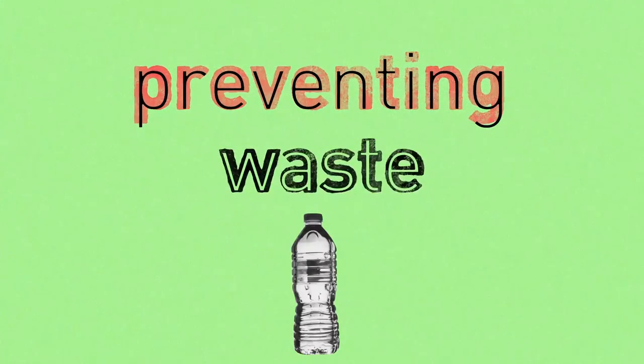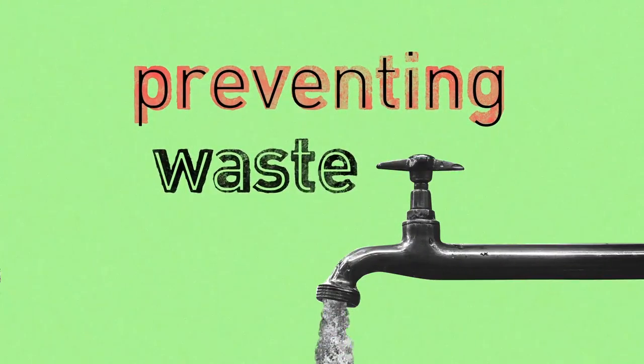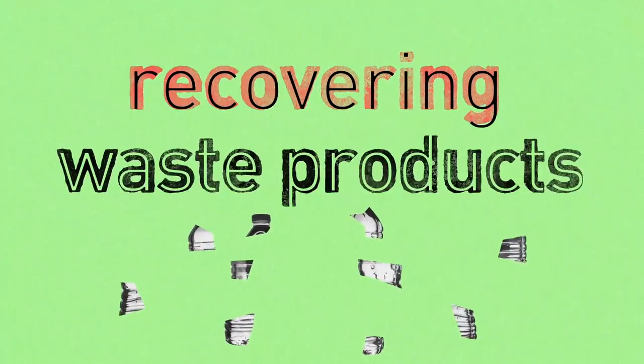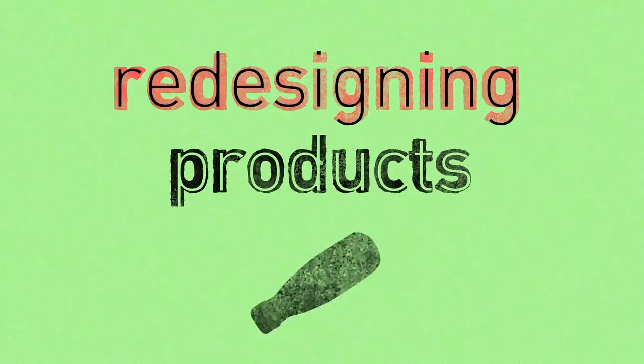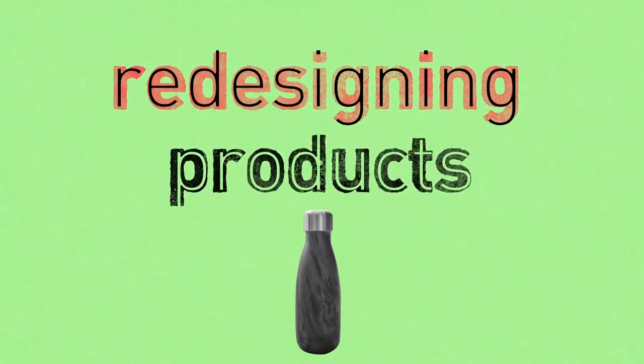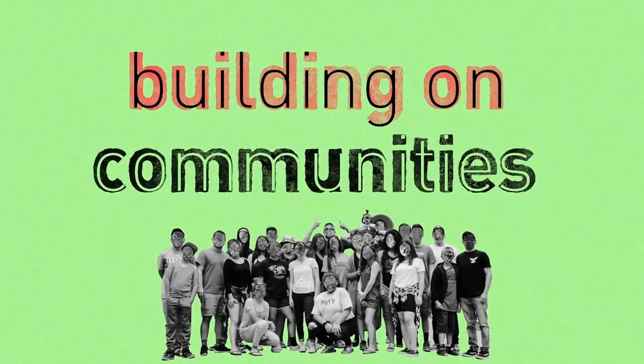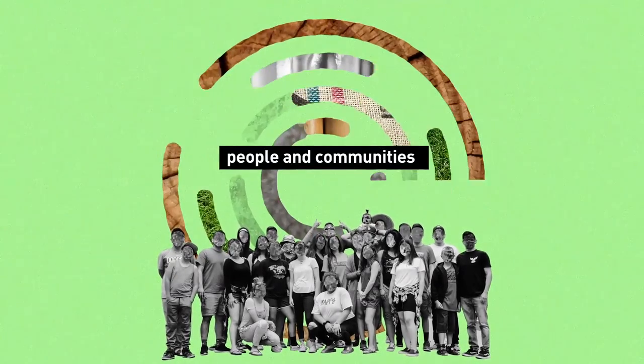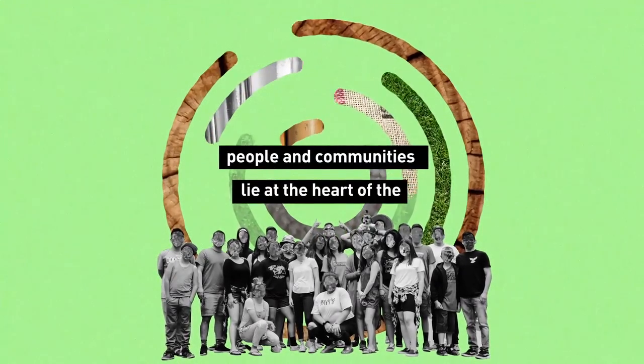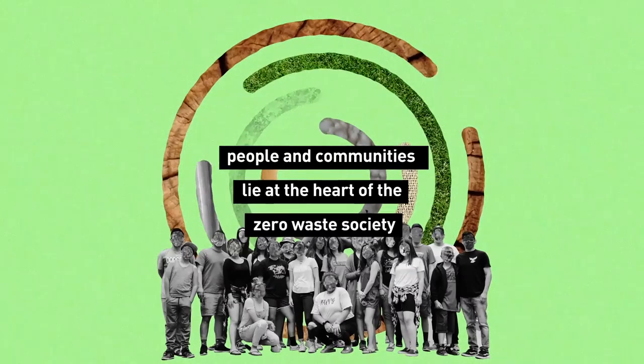Five steps towards a zero waste society. First, preventing waste wherever and whenever possible. Second, recovering waste products. Third, redesigning products that currently cannot be reused, composted or recycled. Fourth, building on strong community action and local-led initiatives, as people and communities lie at the heart of the zero waste society.